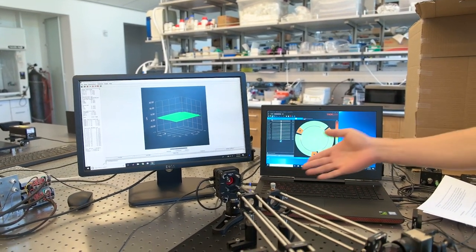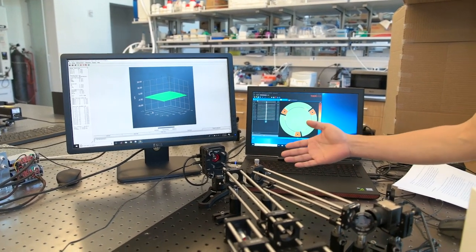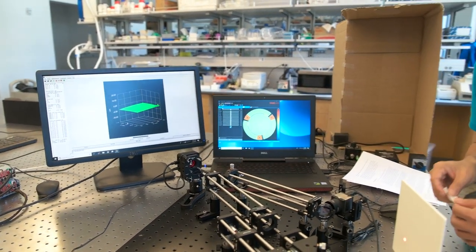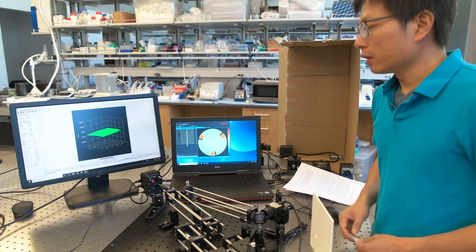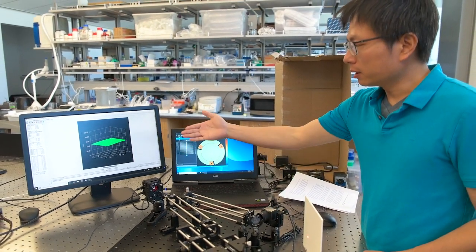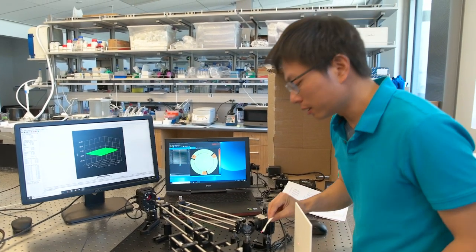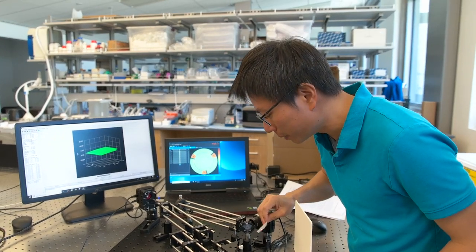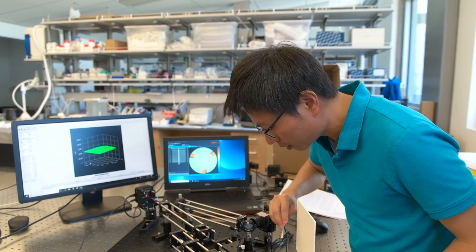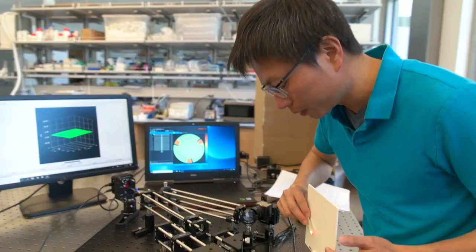For now, the deformable mirror is set flat, acting like a regular flat mirror, so the detected wavefront on the screen is also flat, giving us a collimated laser beam in the space here before the screen.